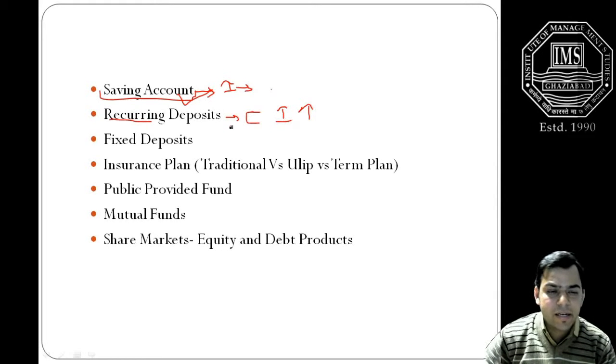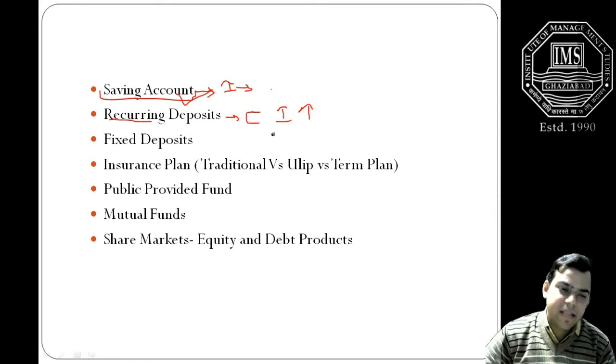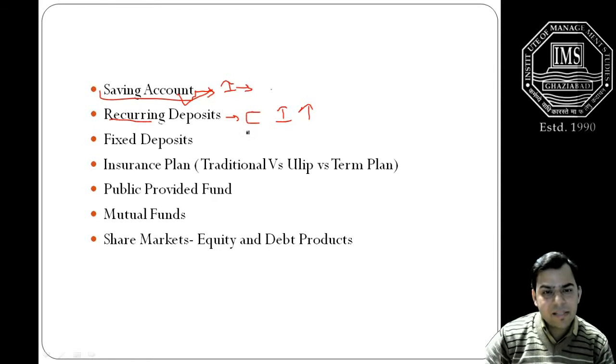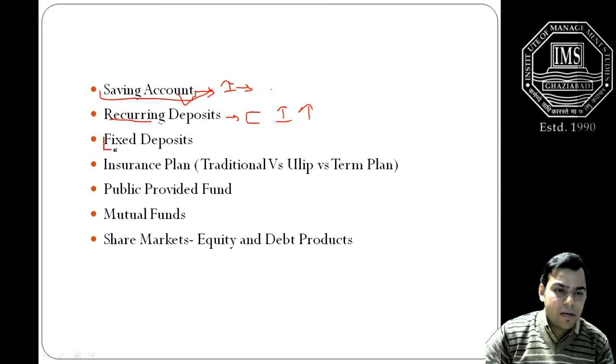So if you have a small saving of 500 rupees or 1000 rupees, you can start an RD with the bank and you can accumulate a reasonable amount of money. At the same time, bank also gives the privilege that you can break this recurring deposit if you are finding it difficult.